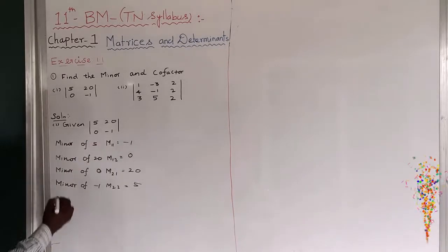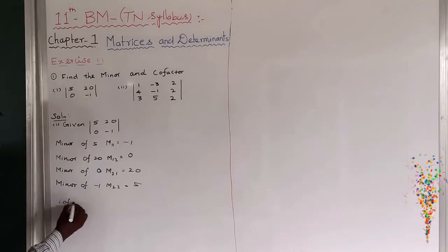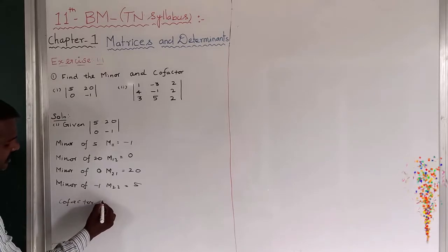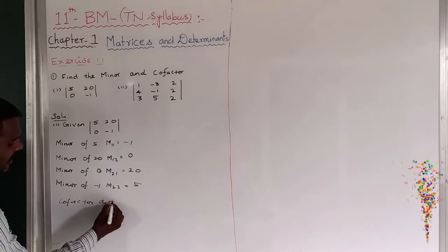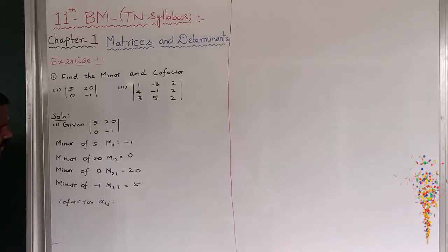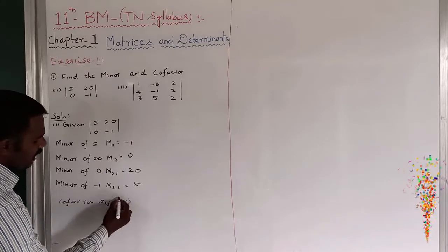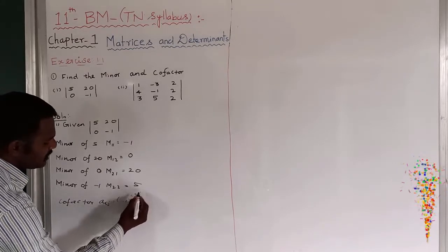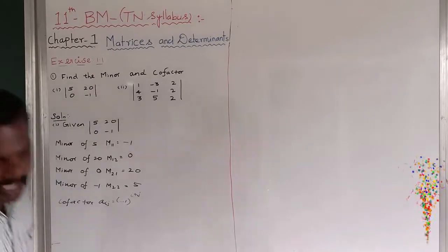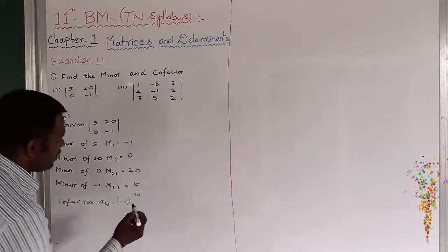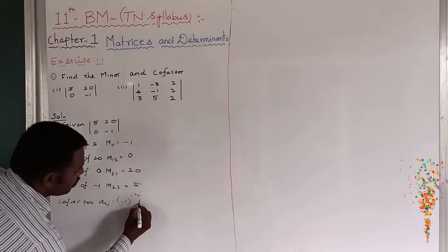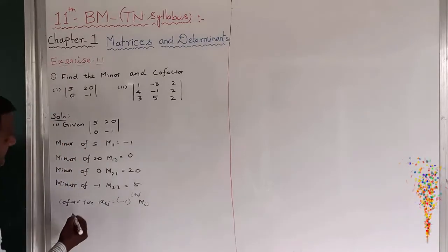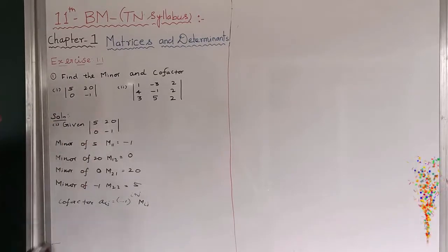Next we have to find the cofactor. We must know the cofactor formula. The cofactor Aij equals minus 1 to the power of i plus j, multiplied by Mij. This is the cofactor formula. So first I want to find the cofactor of 5.